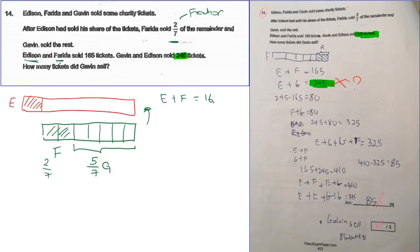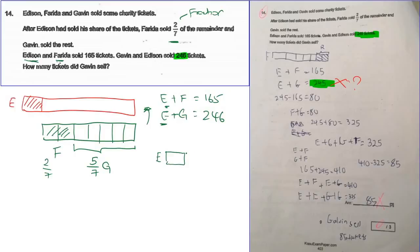It says E plus F equals 165, and G plus E equals 246. We can do some rearrangement because E appears in both equations. If I draw E here and this portion is G — this whole thing here is 246. This is G, and E is here. E plus F is smaller, so F is on the other side.